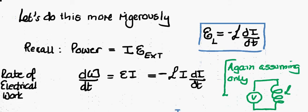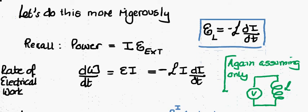Let's do this more rigorously. We know that power equals our current times our EMF, iv. So we can consider the power as a derivative of work done with time. We can use our expression for inductance, and then we just need to integrate this to determine the amount of work done.